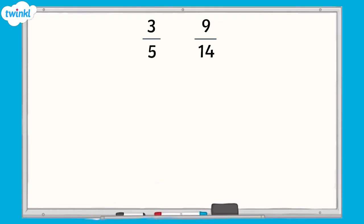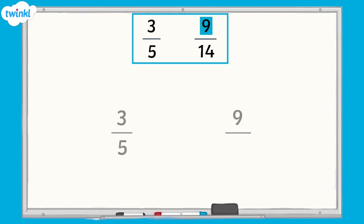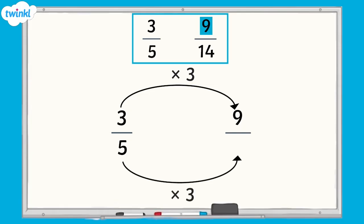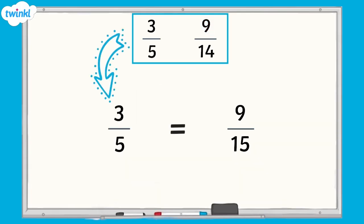Well, we can use our understanding of equivalent fractions to help. If I wanted to compare the fractions 3 fifths and 9 fourteenths using the numerator, I would first need to find a common numerator. 9 is a multiple of 3, so I can use 9 as a common numerator. I need to find the equivalent fraction of 3 fifths which has 9 as a numerator. I know that 3 multiplied by 3 equals 9, so I must apply the same rule to the denominator. 5 multiplied by 3 equals 15. Therefore, the equivalent fraction to 3 fifths that has 9 as a numerator would be 9 fifteenths.